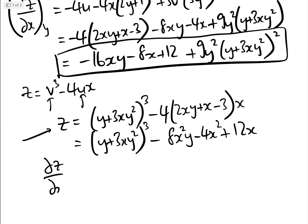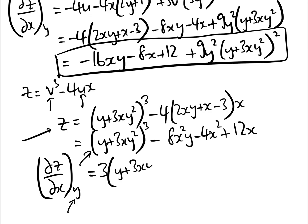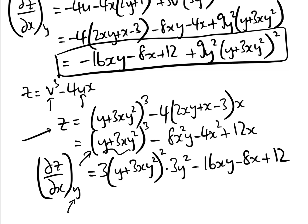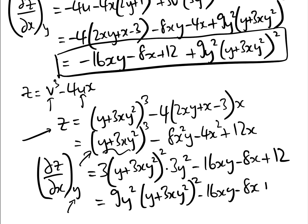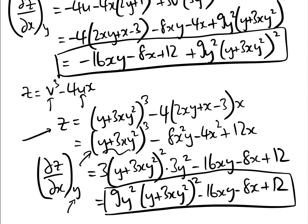Now dz/dx — which is clearly the same as dz/dx keeping y fixed since there are only two independent variables and one dependent variable — requires differentiating with respect to x. That gives 3(y plus 3xy squared) squared times 3y squared, minus 16xy, minus 8x, plus 12, which equals 9y squared times (y plus 3xy squared) squared minus 16xy minus 8x plus 12. This is exactly the same as what we got using the chain rule, confirming the result is correct.